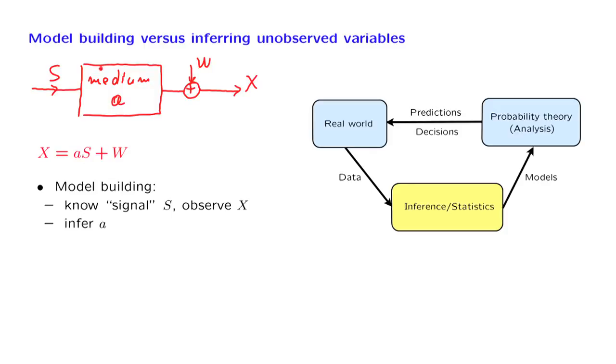But we can also think of a different problem. Suppose we know what the medium is - perhaps we already went through this particular phase. But we're sitting at the receiver and don't know what has been sent. We want to find out what S is. So we're looking again at this equation, but this time we know a and we're trying to make inferences about S.